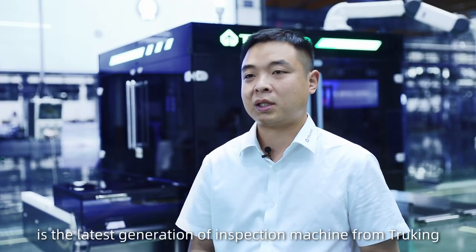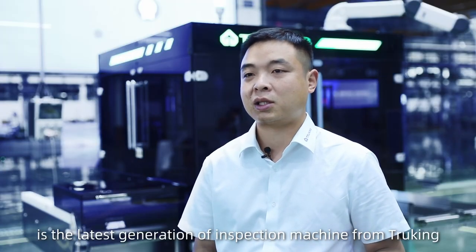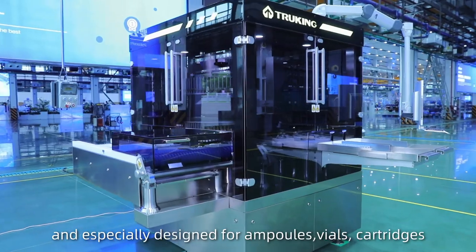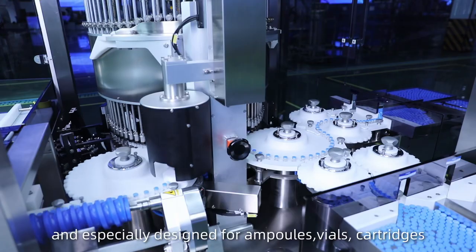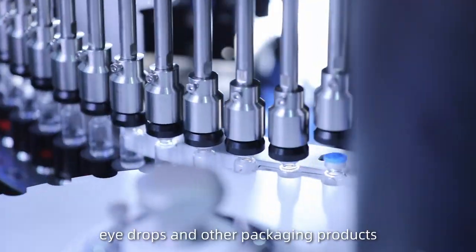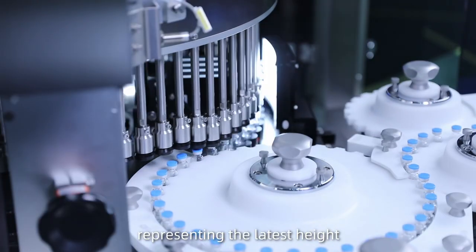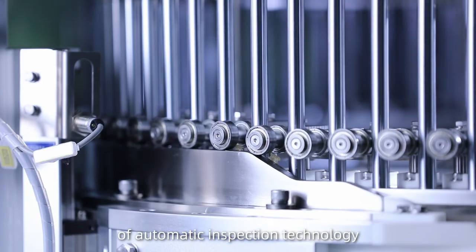AIM 72 is the latest generation of inspection machine from Chukin, and is specially designed for ampoules, vials, cartridges, eye drops, and other packaging products, representing the latest height of automatic inspection technology.